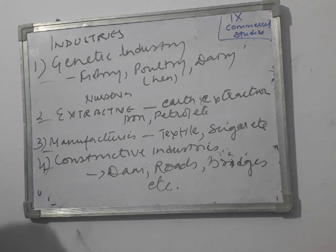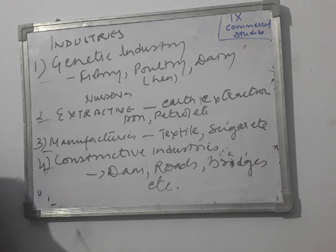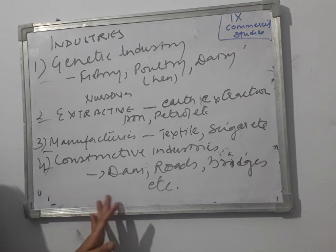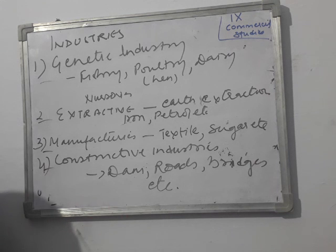Quick revision: industries are of four types. First, genetic industry — examples include fishery, poultry, dairy, and plant nurseries. Second, extractive industry — extracts from beneath the earth, e.g. iron, petrol. Third, manufacturing industry — converts raw material into finished goods, e.g. textile mills, sugar mills. Fourth, constructive industries — engaged in construction of dams, roads, bridges. Your homework is to complete your notes up to what has been taught today. See you in the next class.